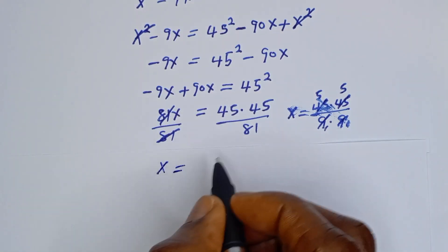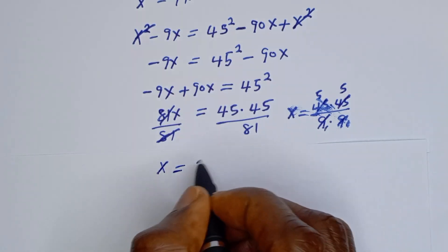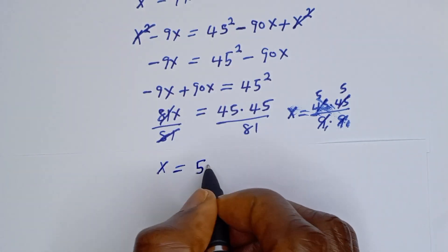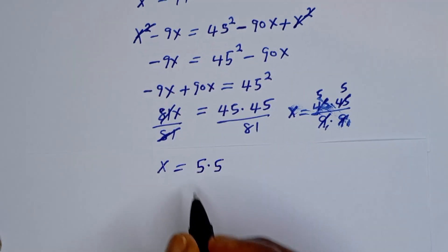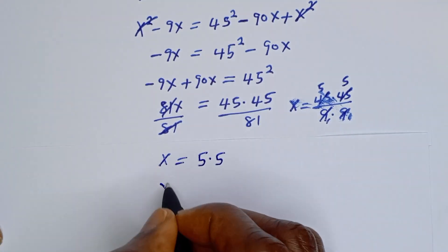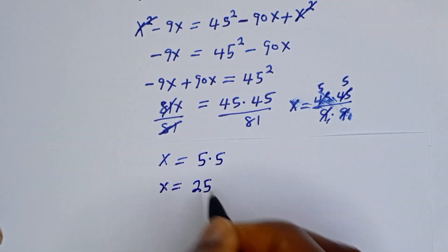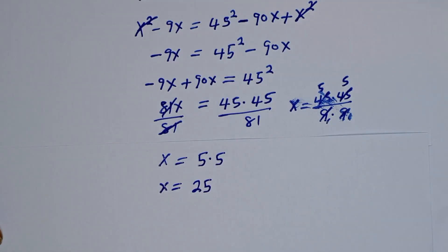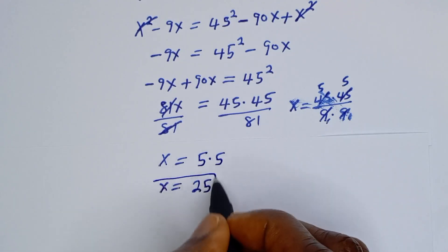We simplify: 45 divided by 9 is 5, and 45 divided by 9 is 5. So s is equal to 5 times 5, which is 25. S equals 25. This is the final answer.